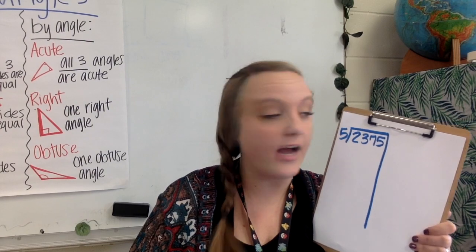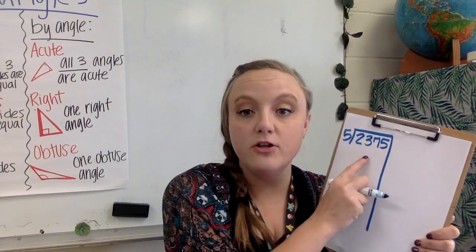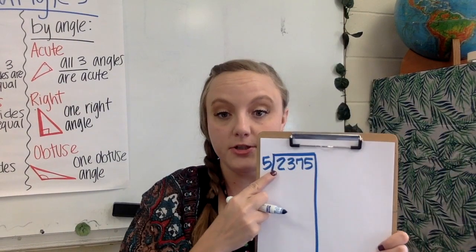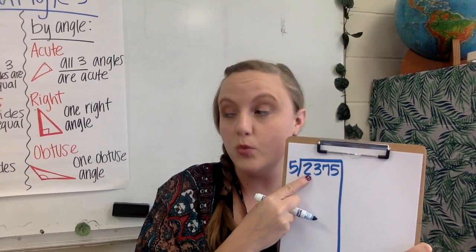We have 2375 divided by 5. If I look at the first part of my number, this 2, you can't make a group of 5 out of 2, so I'm going to look at 23.